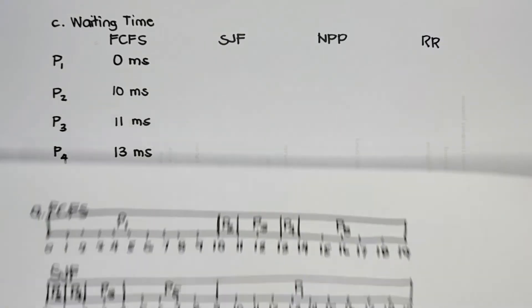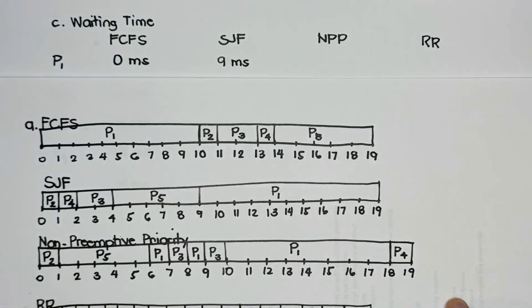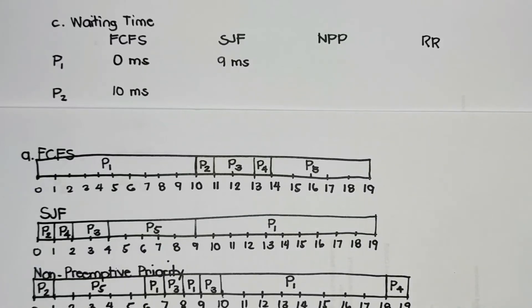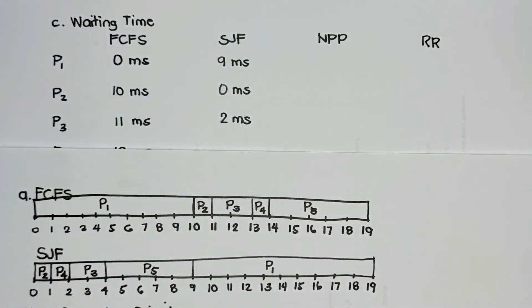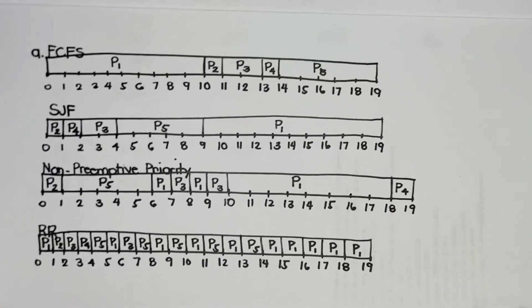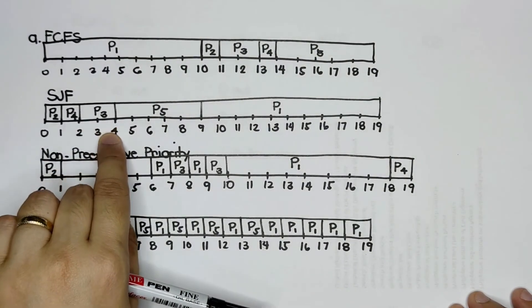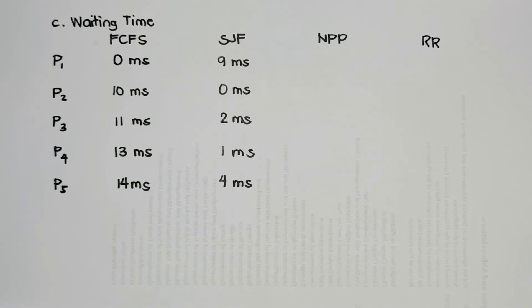For SJF waiting times: P1 = 9ms, P2 = 0ms, P3 = 2ms, P4 = 1ms, P5 = 4ms. This is the waiting time table for shortest job first.